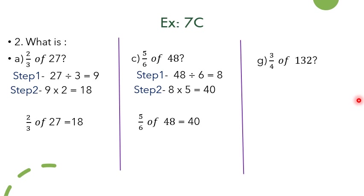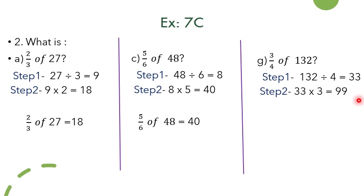There is one more — bit number g: 3 by 4 of 132. Step 1 will be 132 divided by 4. Doing the calculation, we get the answer as 33. In step 2, 33 is multiplied with 3 which gives 99. However big the number, the same procedure applies. The answer of 3 by 4 of 132 is 99.